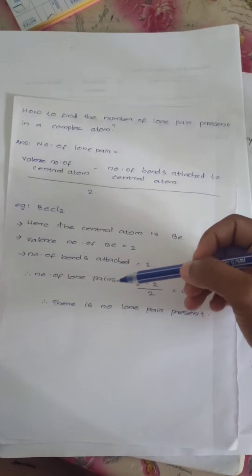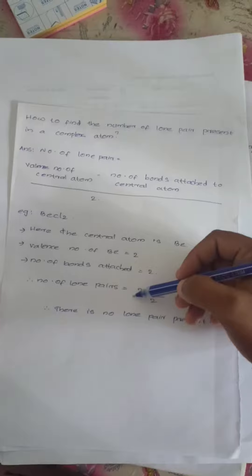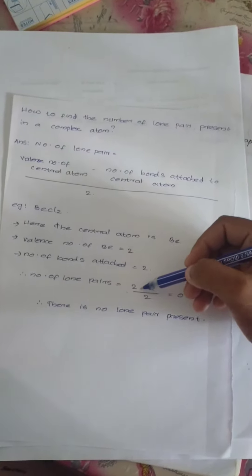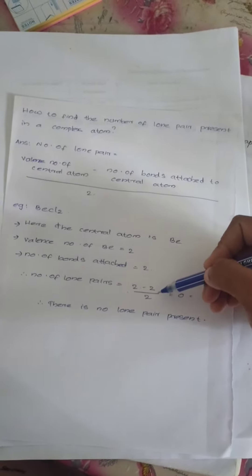So, let's find the number of lone pairs. The number of lone pairs equals the valence number of central atom, here it is 2, minus number of bonds attached to central atom.